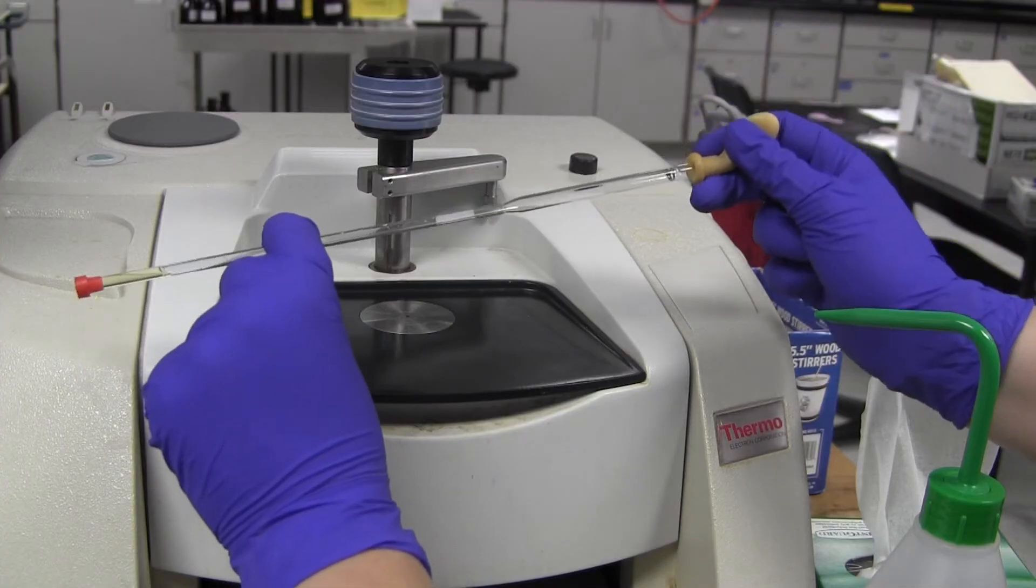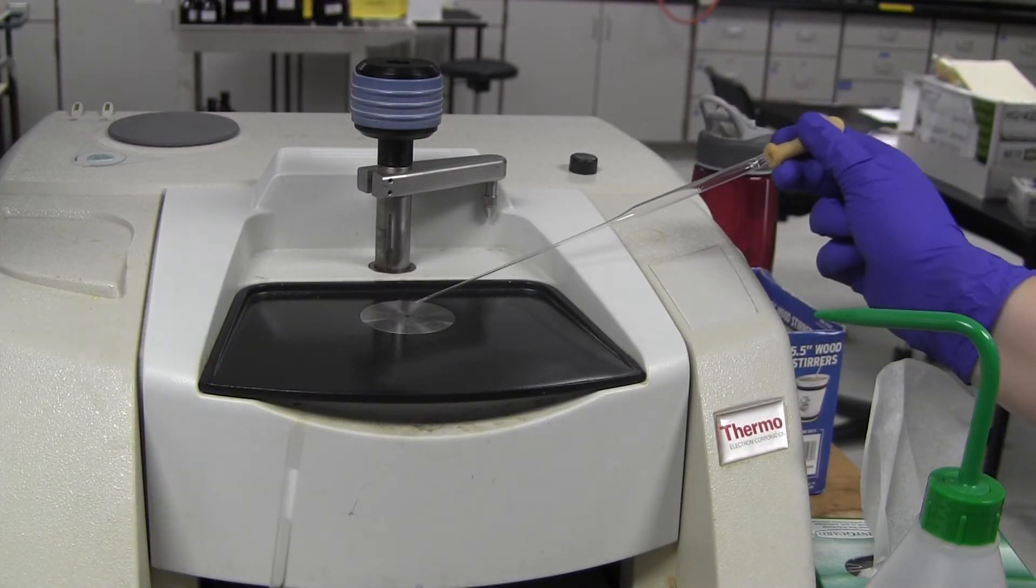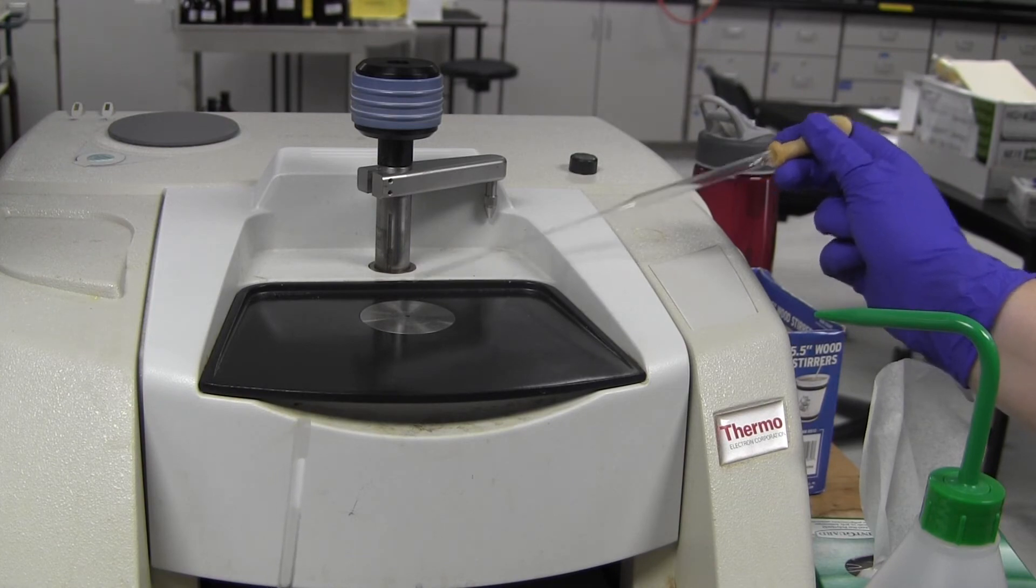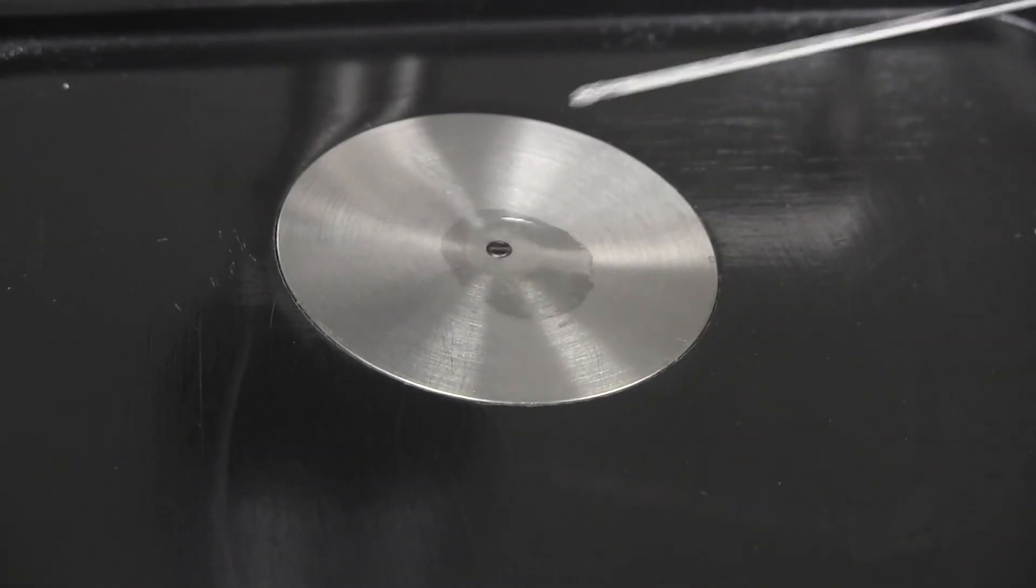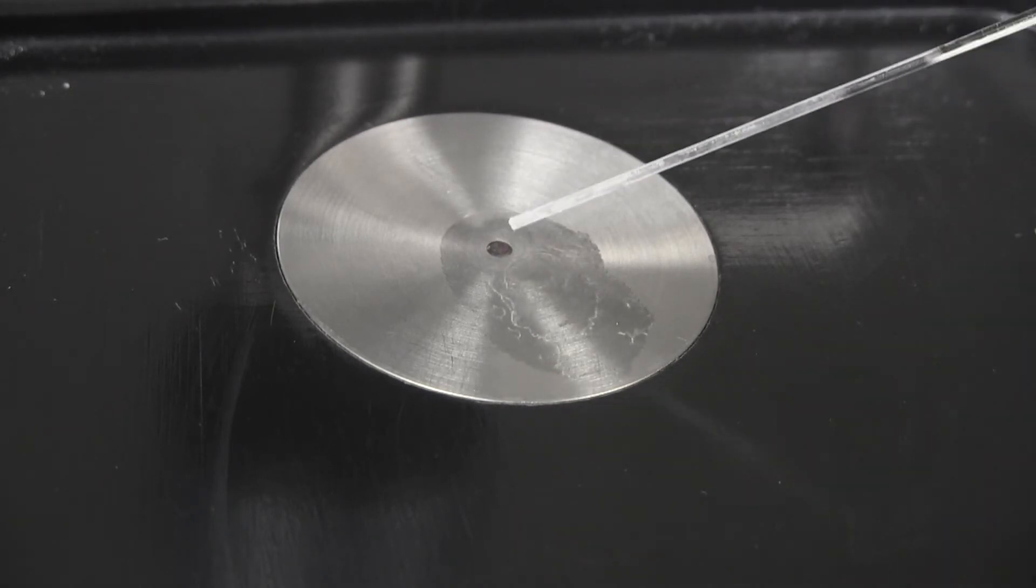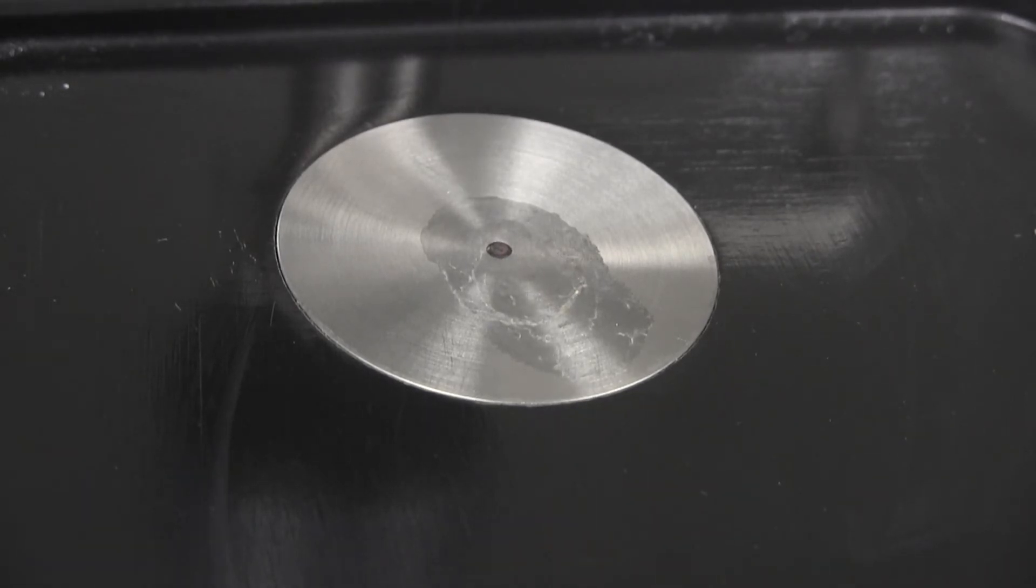Now you will load your sample. Make sure that your unknown is mixed in with the NMR solvent. Invert the tube once or twice. Then, with a glass pipette, put one or two drops from the NMR tube onto the IR crystal. Allow this liquid to evaporate and place one more drop on the crystal.